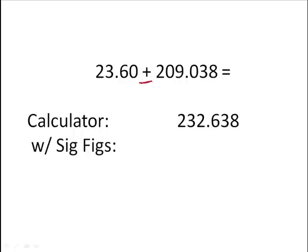All right, we've got addition here. So I'm worried about to the right of the decimal. Two there, three there. My answer is only going to have two to the right of the decimal. So this is what my calculator shows. Let's just make sure we round that. So it's 232.64. Two numbers to the right of the decimal.